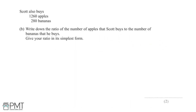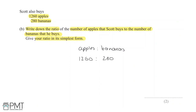Scott buys 1,260 apples and 280 bananas. We write the ratio apples to bananas as 1260:280. Dividing using a calculator (1260/280) gives 9/2, so the simplest form of the ratio is 9:2. You get one mark for a partially simplified ratio and two marks for the fully correct simplified ratio of 9:2.